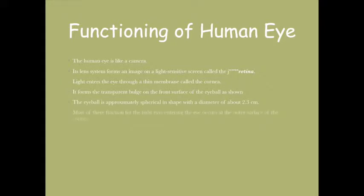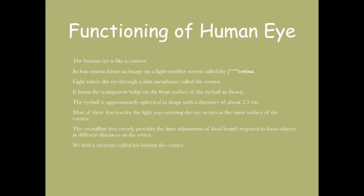Most of the refraction of light entering the eye occurs at the outer surface of the cornea. The crystalline lens merely provides finer adjustment of focal length required to focus on objects at different conditions. Behind the cornea we find the iris - the dark muscular diaphragm that controls the size of the pupil. The pupil regulates and controls the amount of light entering the eye.